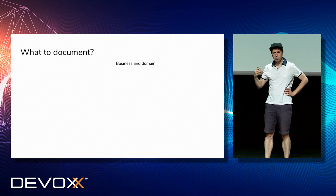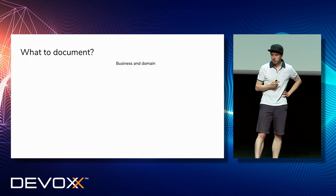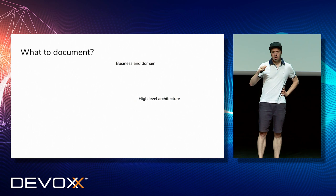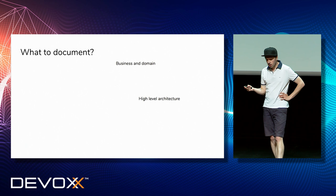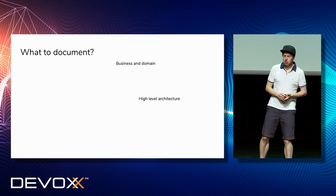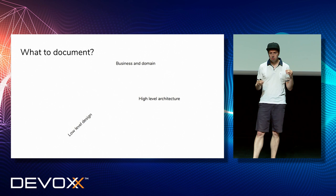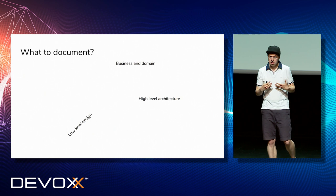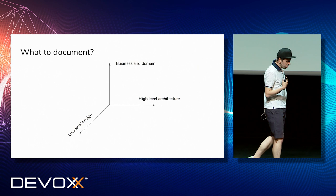We've come up with three areas worth documenting. First is business and domain — what apps are actually doing, what business area we are in. This is something really worth knowing. Then there is high-level architecture — why are we using Oracle over MySQL, why are we using Kafka over RabbitMQ? These are valid questions that, as an engineer, I would like to know before I start committing to a project. And then there is low-level design — those core concepts within our code that have some reasons to exist.